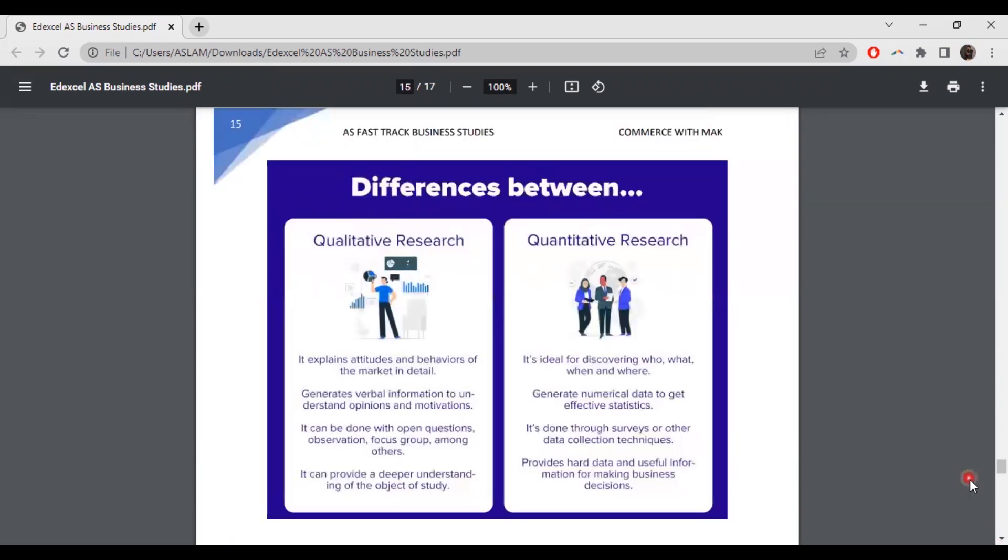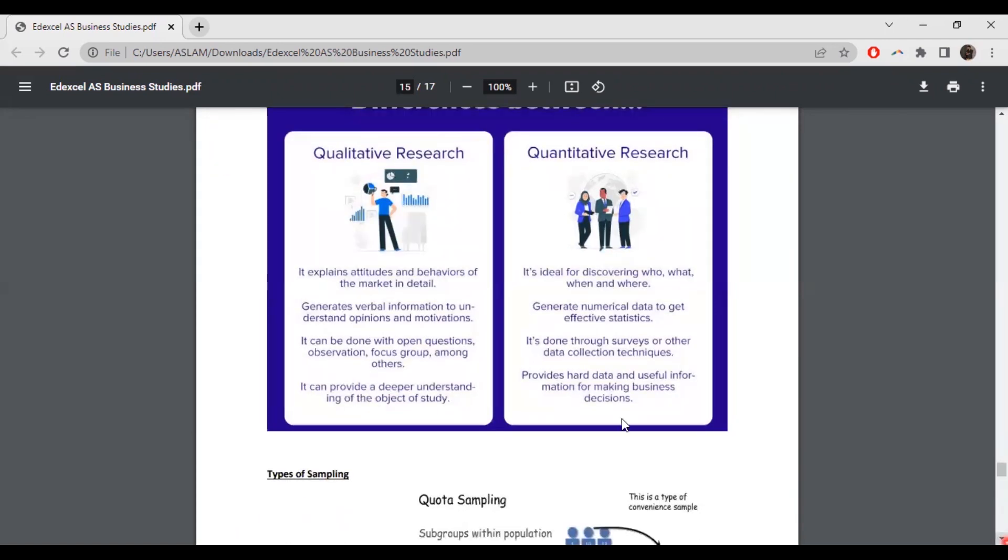Difference between quantitative and qualitative research. You can see here it explains attitudes and behaviors of market in detail, generates verbal information to understand opinions and motivation. It can be done with open questions, observation, focus groups among others. It can provide a deeper understanding of the object of study. People's attitudes and behaviors can help us to take a lot of decisions. Second thing, people verbal information, opinions and motivation are taken into consideration. Third thing, you can ask questions, observe people, maybe focus group, ask certain people about the product's opinion, and then you can take a decision. It can provide deep understanding.